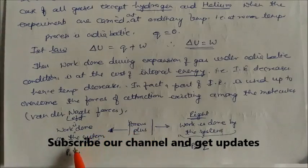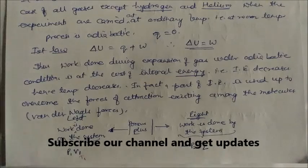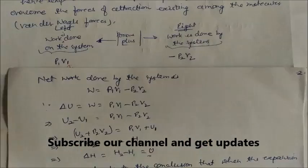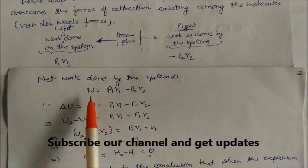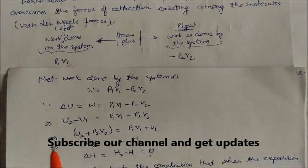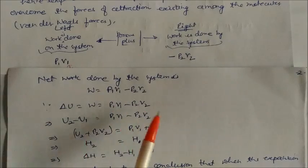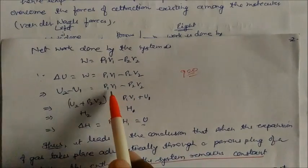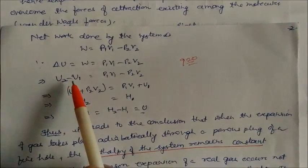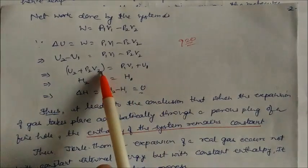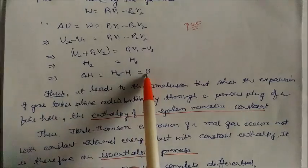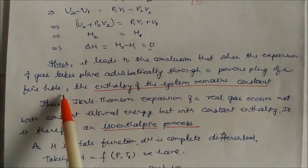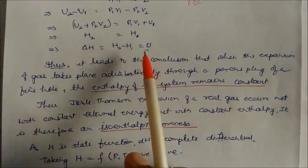On the left side, work is done on the system: P1V1. On the right side, work is done by the system: minus P2V2. So the net work done by the system is W equal to P1V1 minus P2V2. Since delta U equals W and Q is zero for this adiabatic process, we get U2 minus U1 equal to P1V1 minus P2V2. Rearranging: U2 plus P2V2 equals U1 plus P1V1, which means H2 equals H1. Therefore delta H equals zero. When gas expands adiabatically through a porous plug or fine hole, the enthalpy of the system remains constant.